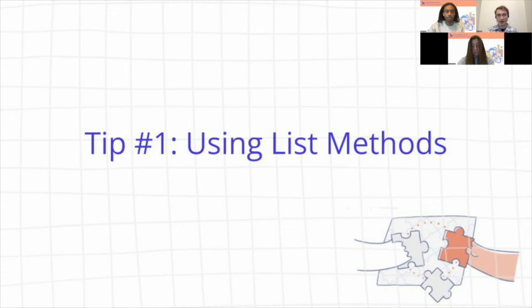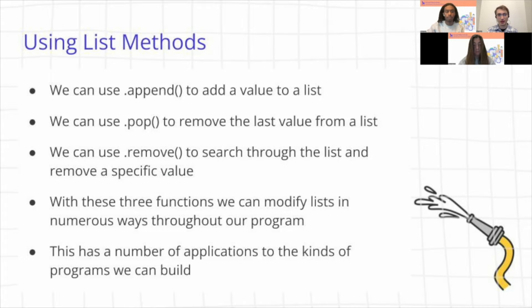Alright. So yeah, with that, let's talk about some more specific tips regarding lists. So the first tip is about using list methods and some of the methods that exist. You already just saw one, which is append, which adds a value to the end of the list. We can also use pop to remove the last value from a list or remove a specific value from a list. For example, if you do .pop and pass a zero into pop, it will remove the first value from the list. But if you call pop without any arguments, it'll just default to removing the last value.